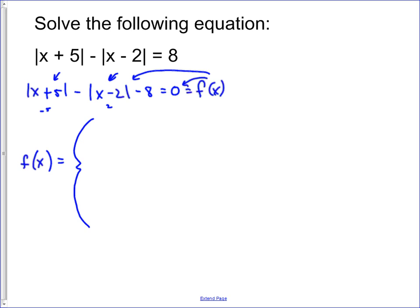And so our intervals are going to be negative infinity to negative five, negative five to two, and two to infinity. And so those three regions represent the places where the algebraic expression is going to be different for this function.